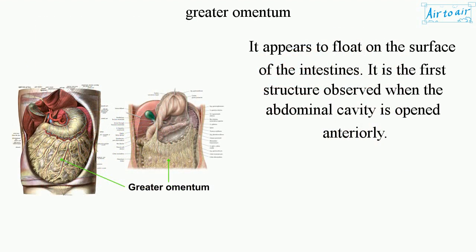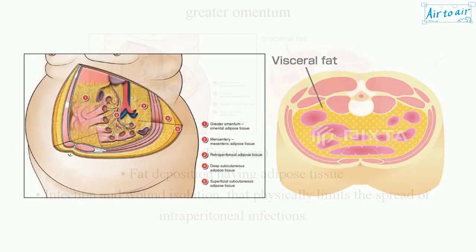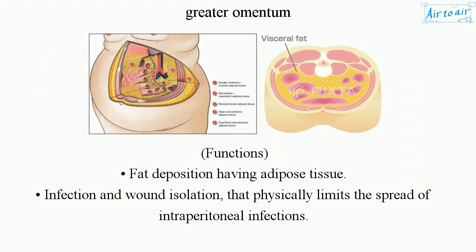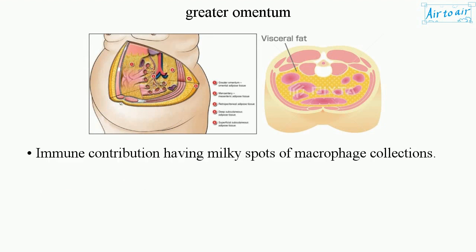It appears to float on the surface of the intestines and is the first structure observed when the abdominal cavity is opened anteriorly. Functions include fat deposition via adipose tissue, infection and wound isolation that physically limits the spread of intraperitoneal infections, and immune contribution through milky spots of macrophage collections.